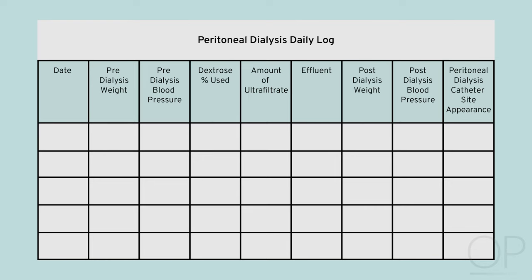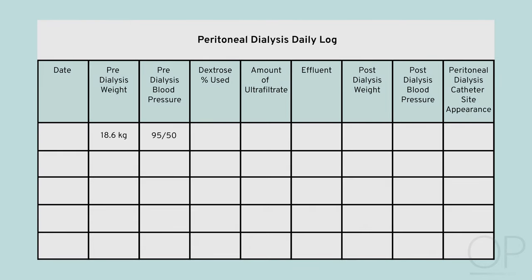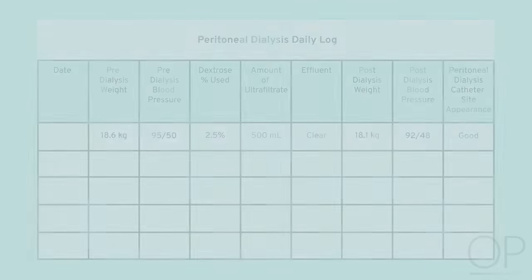Your dialysis team will ask you to record important details about your child every day. They want to make sure your child's peritoneal dialysis is done correctly. We like to use a worksheet to write down these details. Your dialysis team may give you one like it or have you keep track in other ways. We will fill this out with you as we go through the teaching.